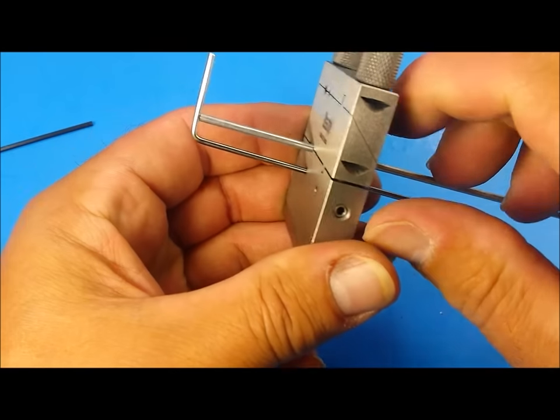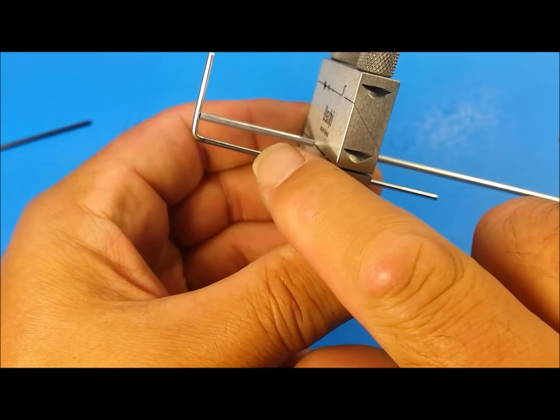If you need a longer gauge, you can easily make one from a similar size copper wire or brass rod.